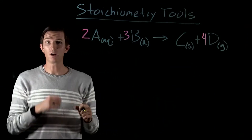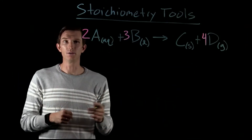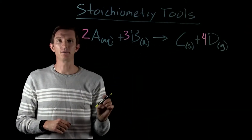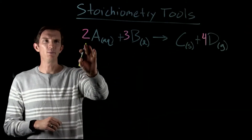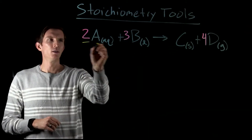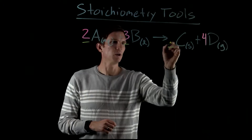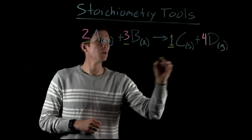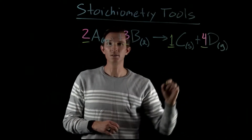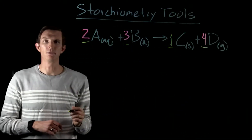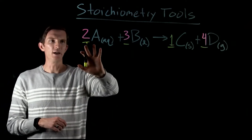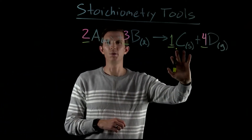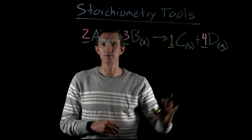Let's start with what we know here in looking at reactants and products. If we remember these coefficients here — if there's nothing, we'd say it is one — they tell us the mole ratios that we'd have between reactant A, reactant B, to product C, etc.